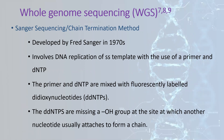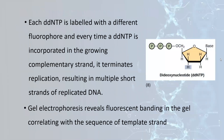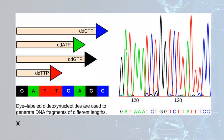Sanger sequencing involved DNA replication of a single-stranded template with a primer and dNTPs, mixed with fluorescently labeled dideoxynucleotides (ddNTPs). These ddNTPs are missing a hydroxyl group at the site at which another nucleotide usually attaches to form a chain. Each ddNTP is labeled with a different fluorophore, and every time a ddNTP is incorporated into the growing complementary strand it terminates replication, resulting in multiple short strands of replicated DNA. Gel electrophoresis reveals fluorescent banding correlating to the sequence of the template strand.